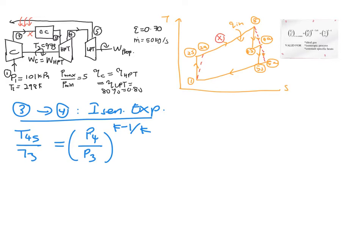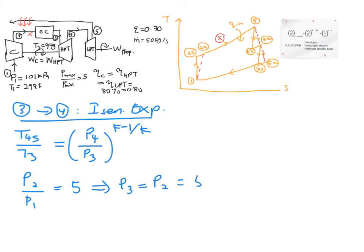There is no problem with P3 because P3 is the same pressure as P2. To find P3, we use P2 over P1 equals 5, and since P1 is given as 101 kilopascals, this gives P3 equal to P2 equal to 505 kilopascals. We can now place P3 into the equation to find T4S, but we still need to solve for P4 first before we can determine T4S.